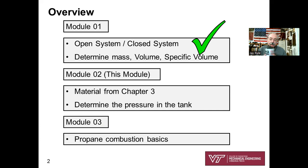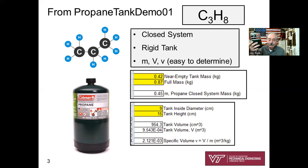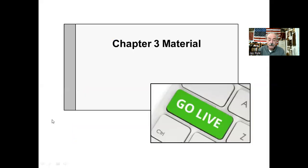I'm going to show you how to determine the pressure inside this tank without putting a pressure gauge on it — it's a neat trick. To recap: propane is C3H8. We determined we had 0.45 kilograms of propane in this tank, calculated the extensive property volume, and got the specific volume of 2.121 times 10 to the minus 3 cubic meters per kilogram. That specific volume is going to be our key to pinpoint the pressure and thermodynamic properties inside the tank.